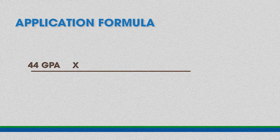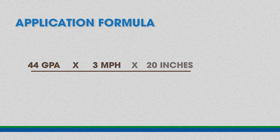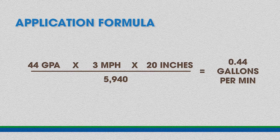Let's say we need to apply 44 gallons per acre. We're going to be traveling at 3 miles per hour, and our nozzles are at 20 inches. So we multiply 44 gallons per acre times 3 miles per hour times 20 inches, and divide that by 5940, and that equals 0.44 gallons per minute. So we need a flow rate out of our nozzle of 0.44 gallons per minute.